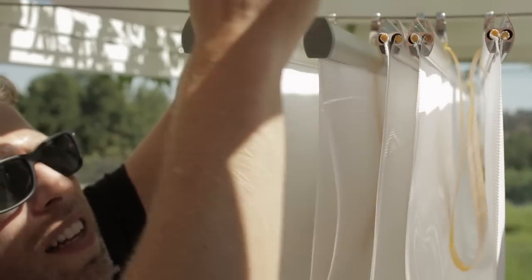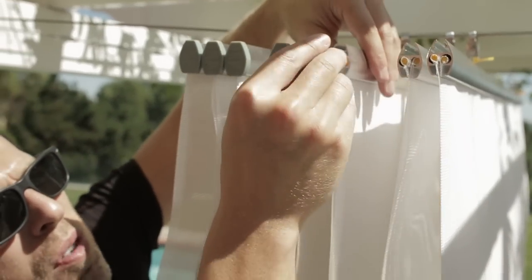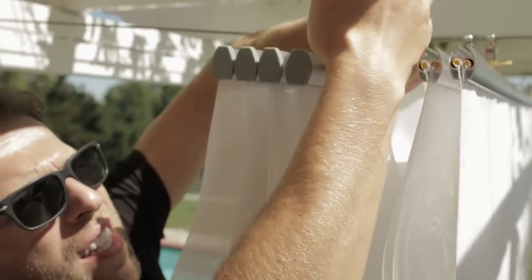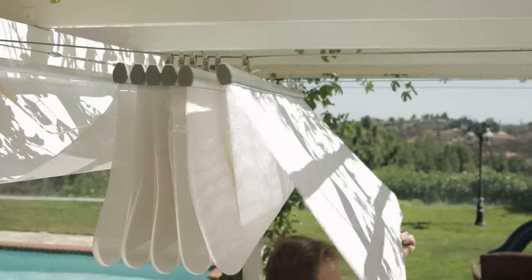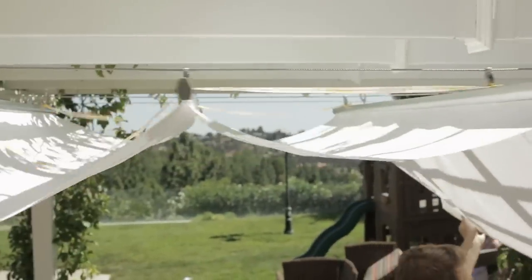Once all panels are in place, we install the remaining end-caps to prevent the panels from falling out. Now we can lock the canopy on either end and close or open it in either direction.